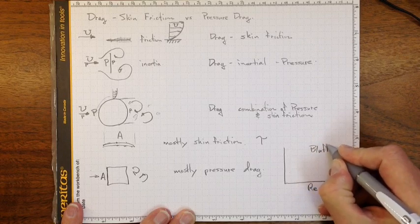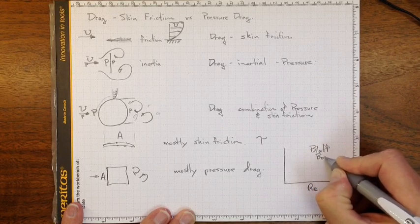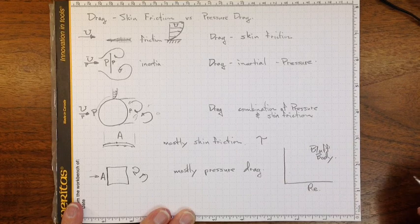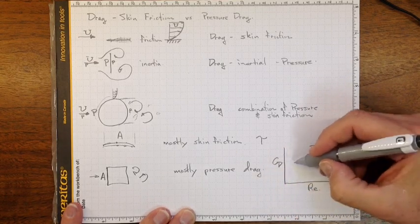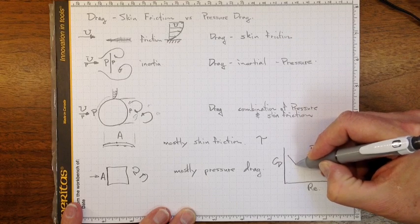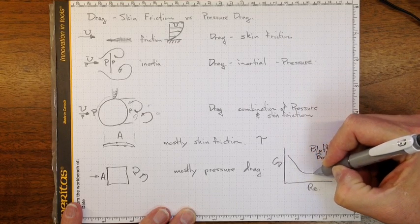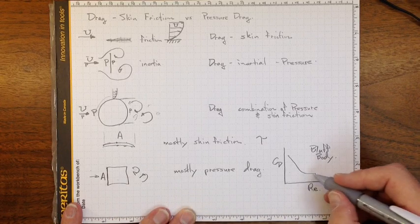which is the term that we use for things that aren't streamlined, what we'll see is a drag coefficient that drops down and down and levels off as we get to a point where this wake is fully developed.